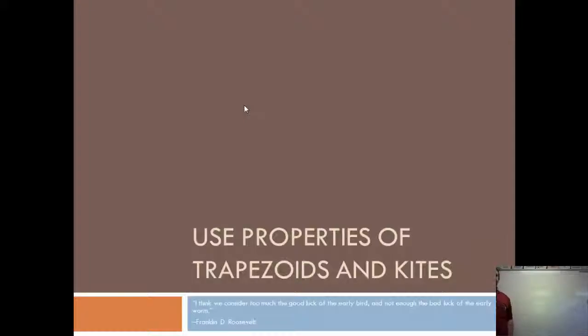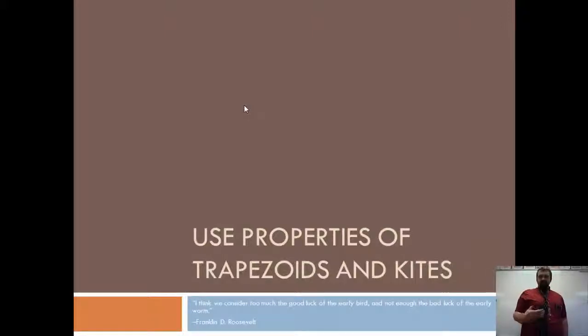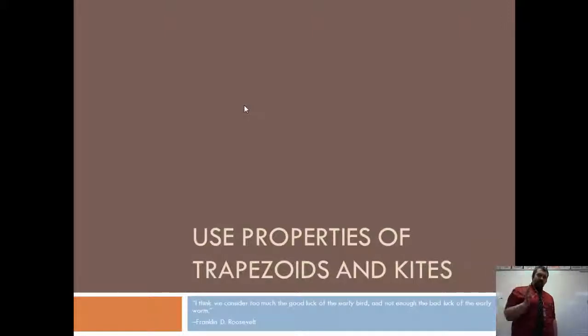Good evening, class. Today the topic will be trapezoids and kites. So we've talked about parallelograms, rhombuses, rectangles, and squares. And now we're going to take a look at trapezoids and kites.